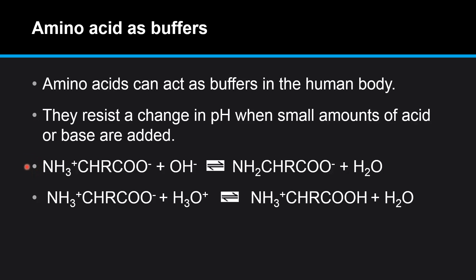So here are two equations which show how amino acids can act as buffers in the human body. Just like the previous example we looked at, in the first equation this amino acid is acting as a Bronsted-Lowry acid by donating a proton to the OH negative. And in the bottom example the amino acid is accepting a proton from the H3O plus ion. So therefore it's acting as a Bronsted-Lowry base.